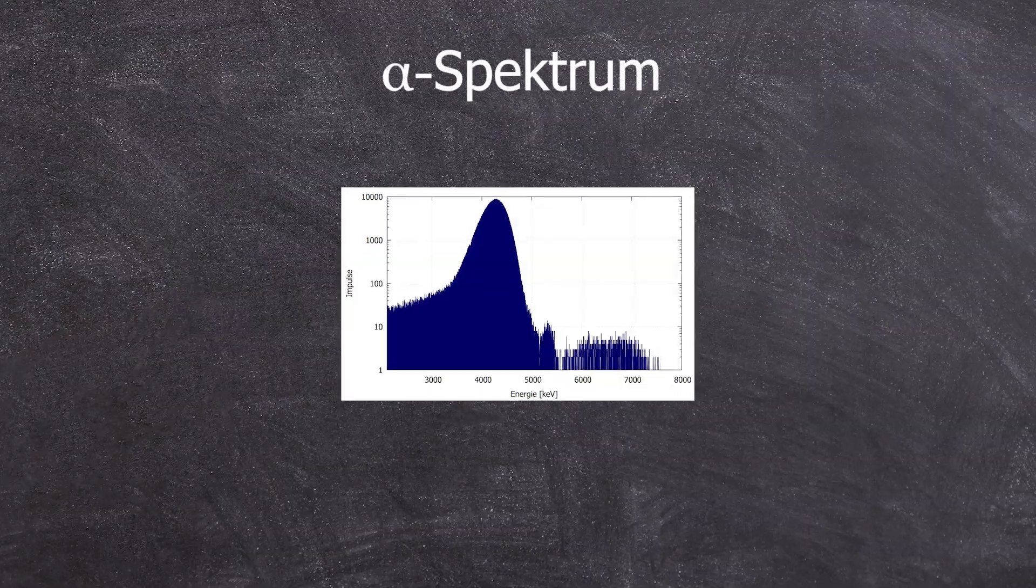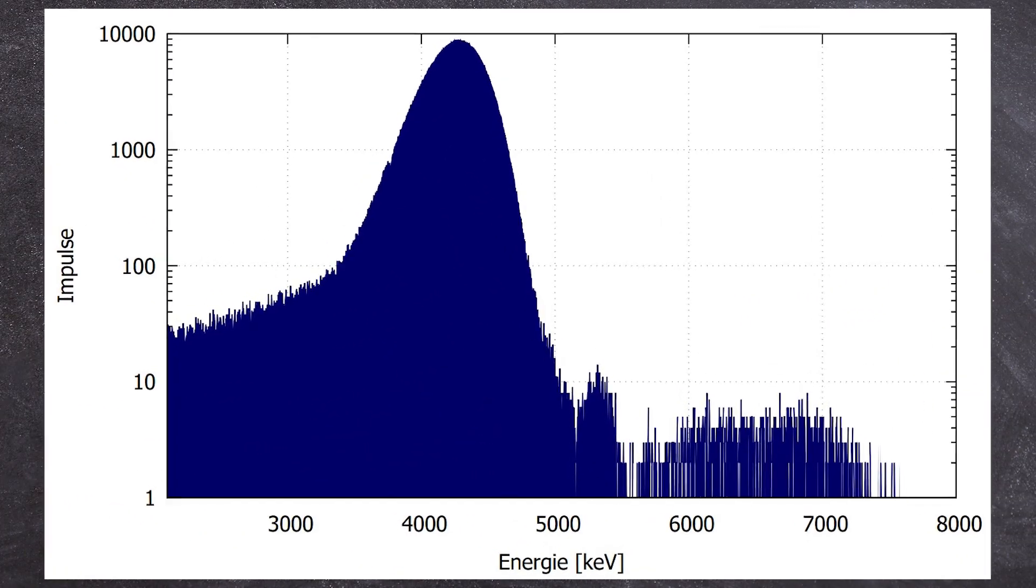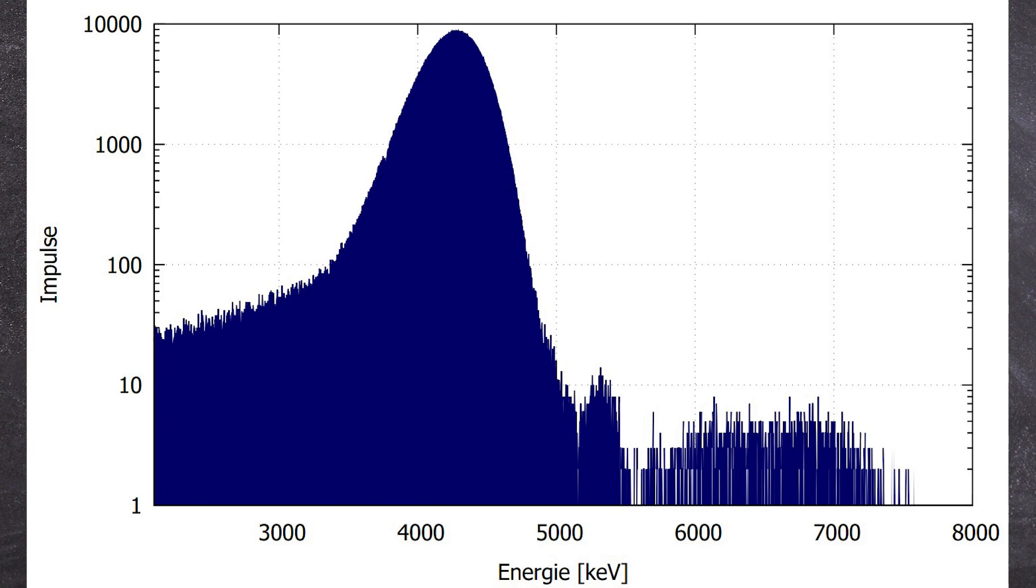The alpha spectrum that we can see here is very characteristic for such a sample. It's not pure americium on the surface, but it is in form of an alloy. This slows down the alpha particles from the americium.